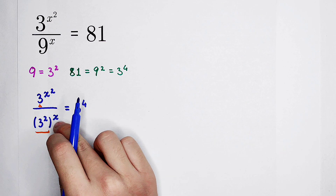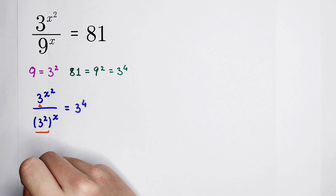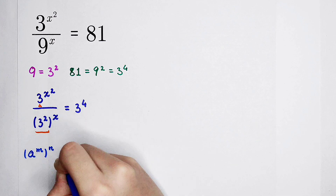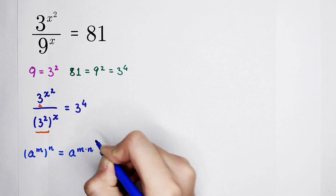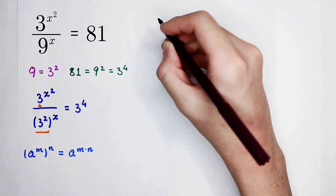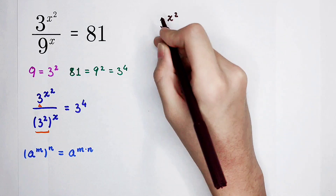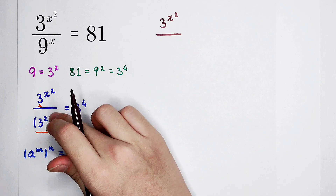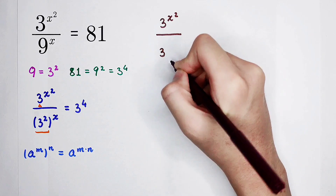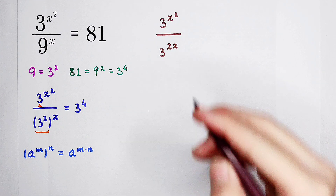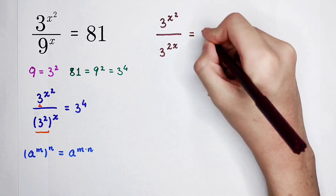Now, how do we deal with the denominator — 3 to the power of 2, all to the power of x? We use the formula: a to the power of m, all to the power of n, equals a to the power of m times n. So the denominator becomes 3 to the power of 2x. The numerator stays as 3 to the power of x squared, and the right-hand side is 3 to the power of 4.